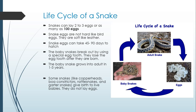An interesting thing to note is that some snakes actually are like mammals and give birth to live babies — they do not lay eggs. Even though most snakes do lay eggs, some of them don't. Rattlesnakes, garter snakes, and boa constrictors are still snakes, but they just give birth to live babies. We'll talk more about this when we get to the life cycle of a fish, because some fish have different life cycles as well.